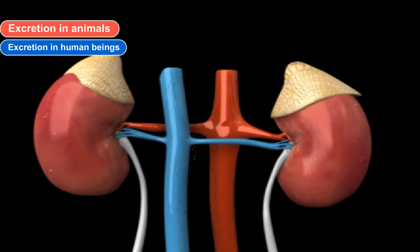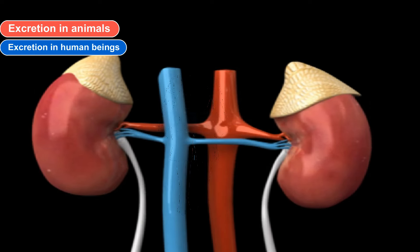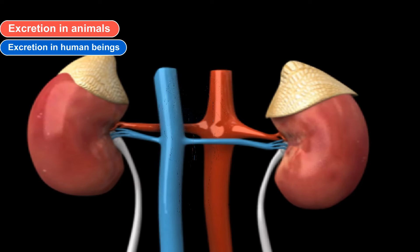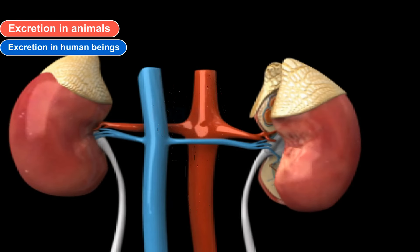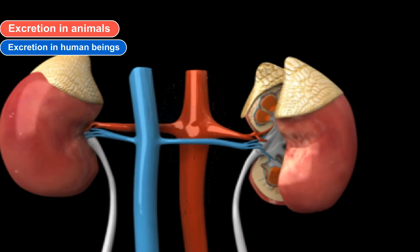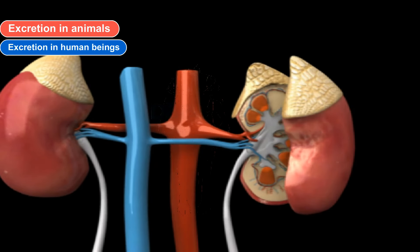Ureters. The waste formed after removal of water from blood is called urine, and this reaches the urinary bladder through the ureters. Ureters are tube-like structures attached to the kidneys that open into the urinary bladder.